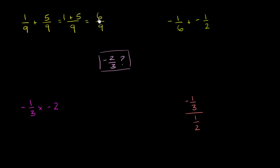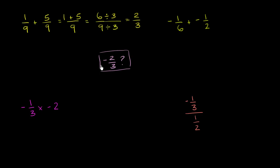Can we simplify this in any way? Well, both 6 and 9 are divisible by 3, so let's divide them both by 3. 6 divided by 3 is 2, and 9 divided by 3 is 3. So this is 2 thirds. But what we're trying to get to is negative 2 thirds, so these are not equal. This expression does not equal negative 2 thirds.